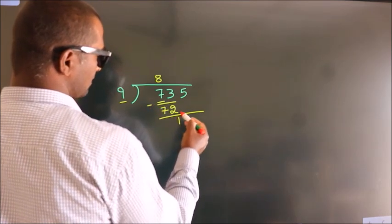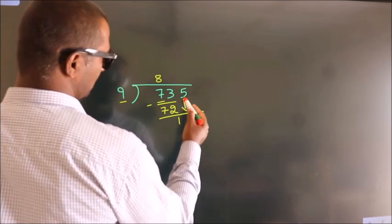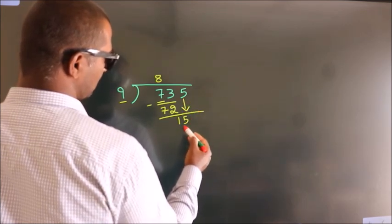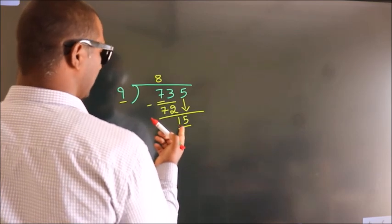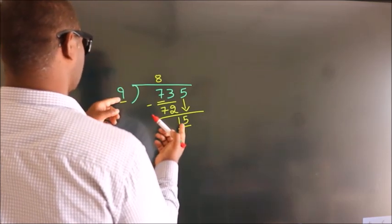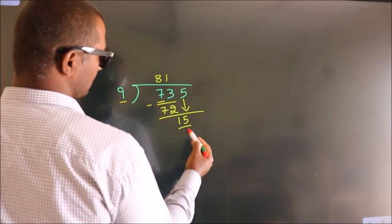After this, bring down the next number. So 5 down, giving us 15. A number close to 15 in the 9 table is 9 times 1, which is 9.